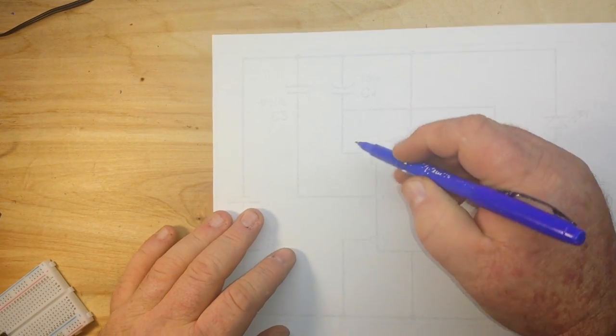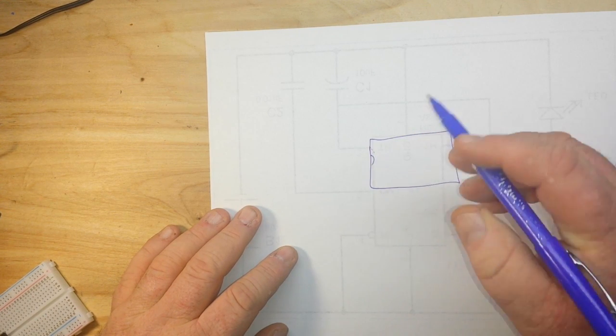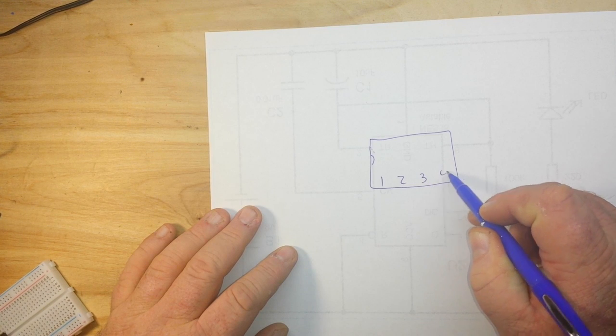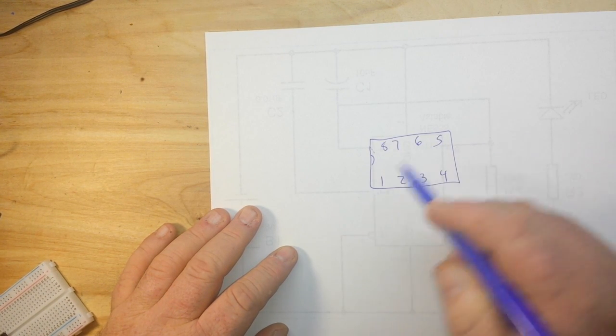So first, let's draw our chip so we know what we're talking about. So we have a point of reference. 1, 2, 3, 4, 5, 6, 7, 8. These are our pins.